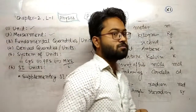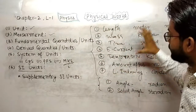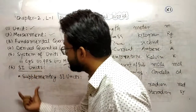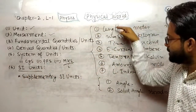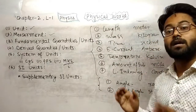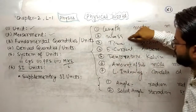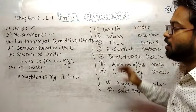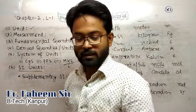These nine units — seven fundamental and two supplementary — are accepted by the International System of Units, and each has a particular definition. In the next video, we will discuss the definitions of all nine SI units. Thanks for watching.